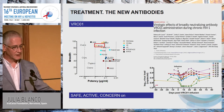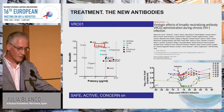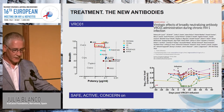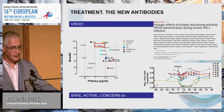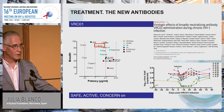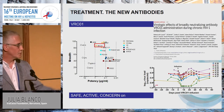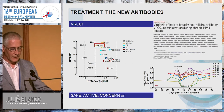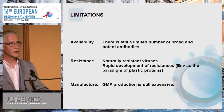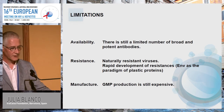As an example, in a VRC-01 trial in HIV-infected individuals, some showed a very nice and sustained decay in viral load, but others showed no response—clearly associated with the sensitivity of the viral envelope to this antibody. In addition, resistance emerged quite rapidly in those studies.